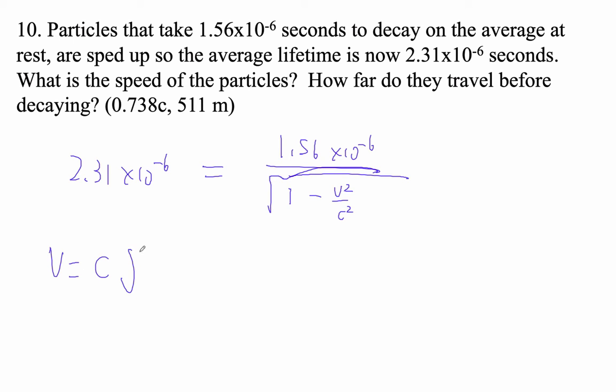Well, the velocity is c times the square root of 1 minus the small thing, which is 1.56, right? Times 10 to the minus 6 squared over the big thing. Okay, so that is going to be the square root of 1 minus 1.56 squared divided by 2.31 squared. And that's 0.7375 c, or 0.738, the speed of light.